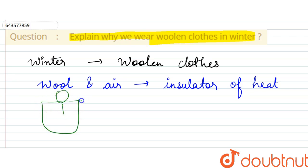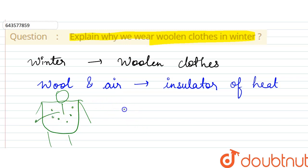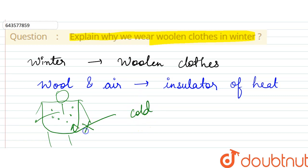Consider a woolen cloth and a boy wearing it. The pores filled with air and the wool itself won't allow the cold outside to get in — they prevent heat transfer.